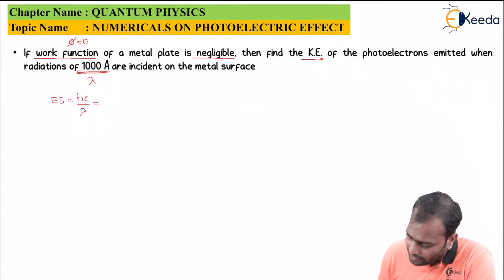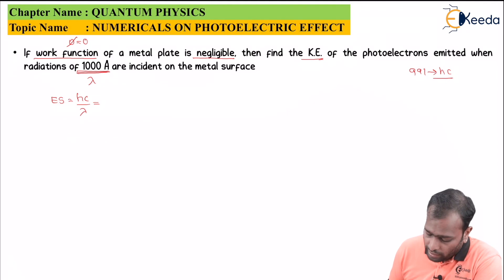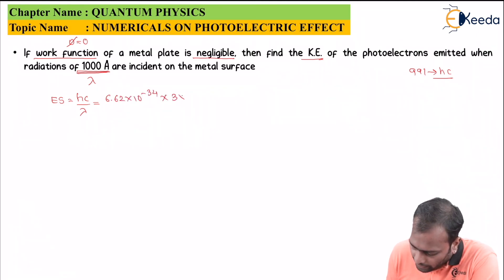You can use the value of h and c directly in the case of numerical solving. However if that is not the case we need to substitute the value of h as 6.62 into 10 to the power minus 34 multiplied by 3 into 10 to the power 8 which is the speed of light divided by lambda which is 1000 angstrom. Of course in SI unit we will be multiplying with a factor of 10 to the power minus 10.